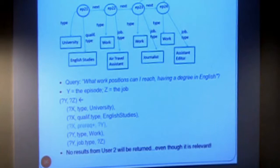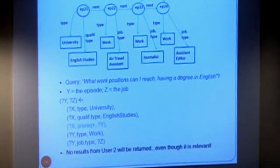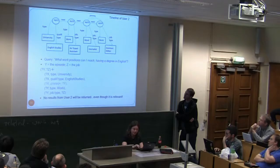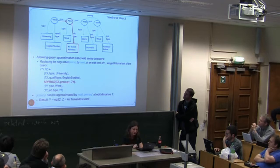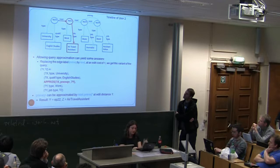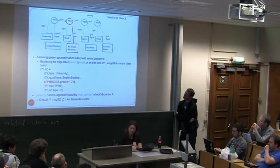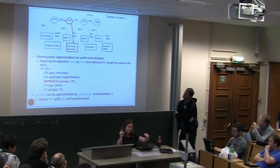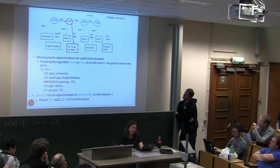The first two conjuncts evaluate to and return episode 21, highlighted in blue. But nothing more can be gleaned from this graph because there is no prereq label going from episode 21 to anywhere else. That's unfortunate since there's good relevant content in the graph. If we allow approximation of that particular conjunct, using prereq+ (one or more prereq labels), one of those can be substituted by 'next'. We end up with the expression 'next and then zero or more prereqs', moving through the graph. Episode 22 matches y-type work and y-job z, returning results at distance one: episode 22, air travel assistant.